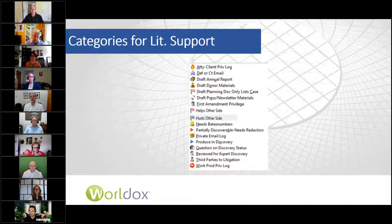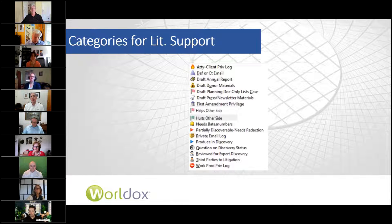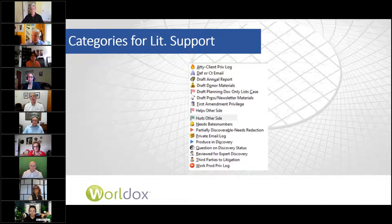If you have something that says 'needs review,' then you can have the attorney in charge find all the documents that need review. When the review is done, you remove that category and mark it however it needs to be marked. There are lots of other ways of using categories, but these are some of the things that I and my clients have found to be most useful.